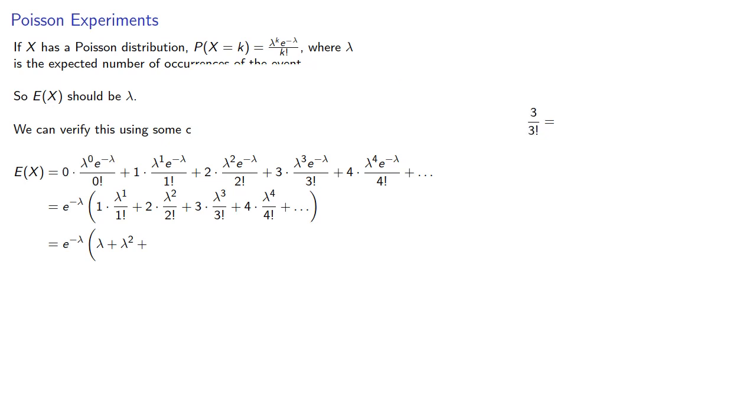3 divided by 3 factorial. If we expand the 3 factorial, remove the common factor, and simplify, we get 1 divided by 2 factorial, which means the next term simplifies to lambda cubed divided by 2 factorial. 4 divided by 4 factorial will be, and so our next term simplifies as lambda to the 4th divided by 3 factorial, and so on.